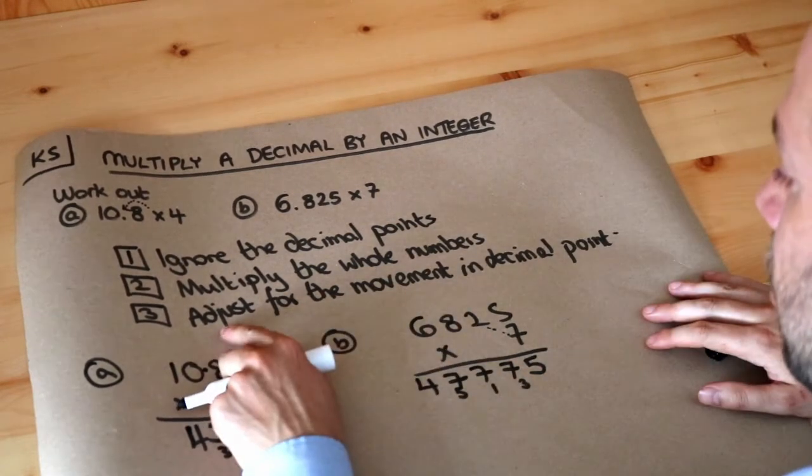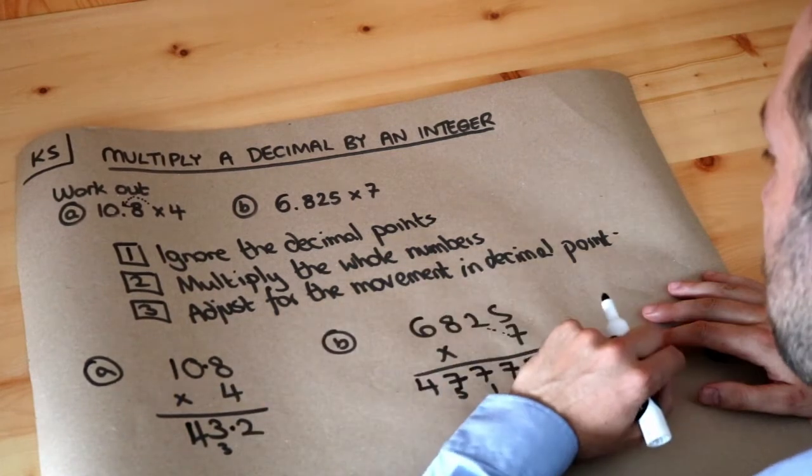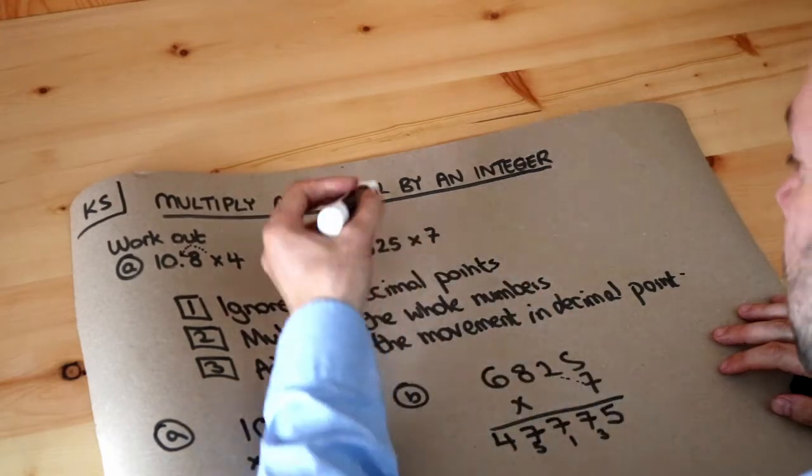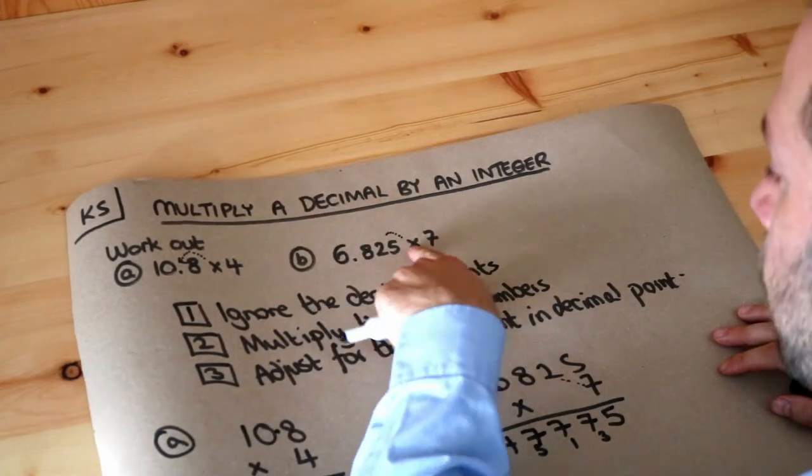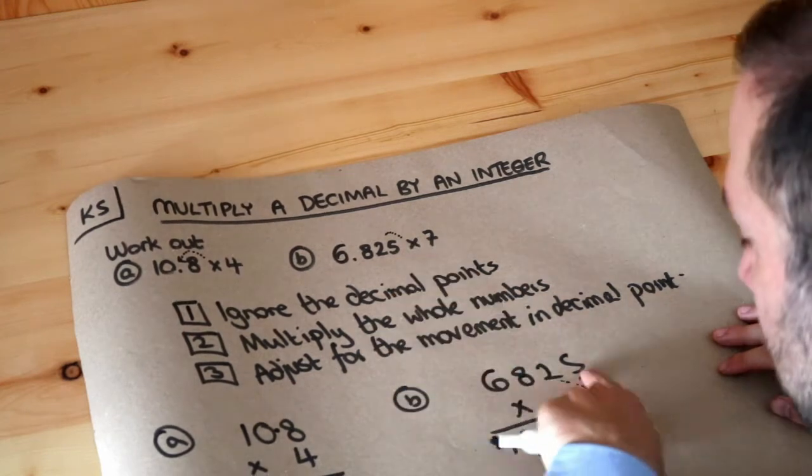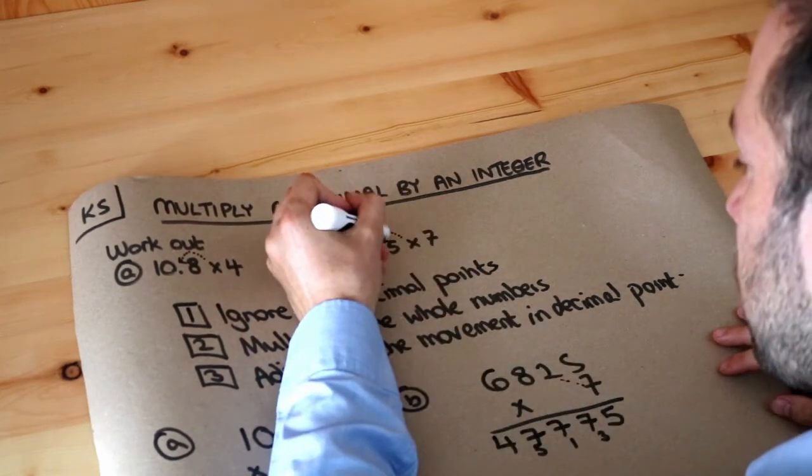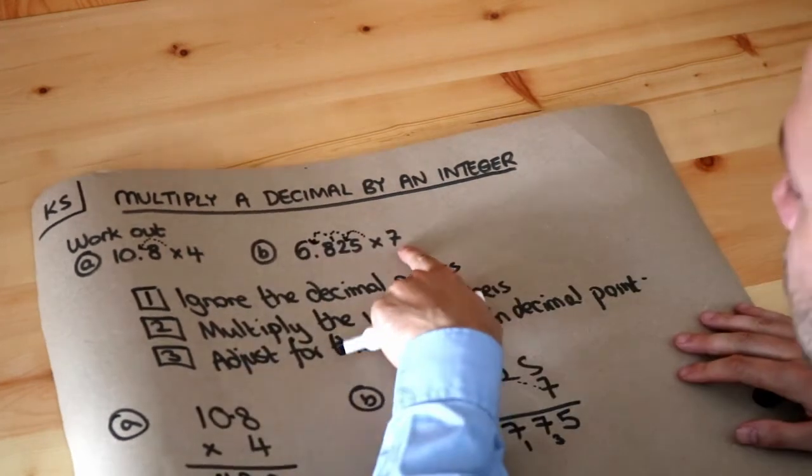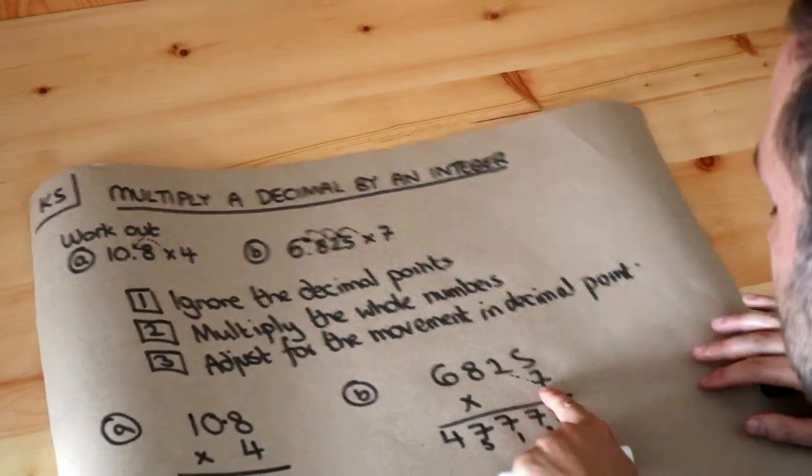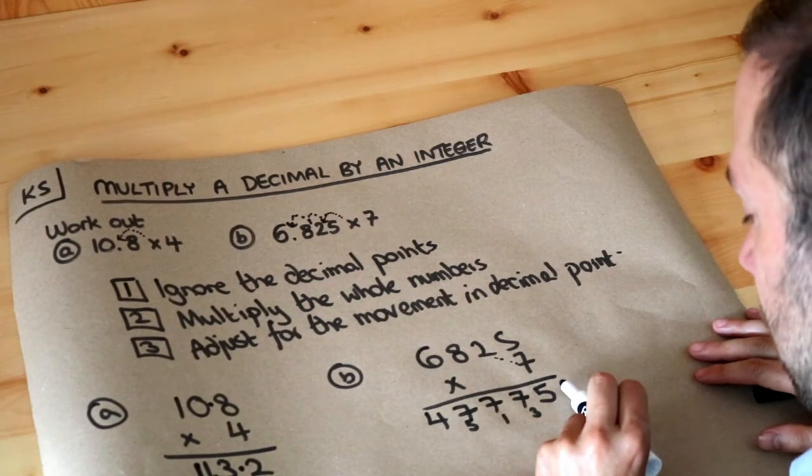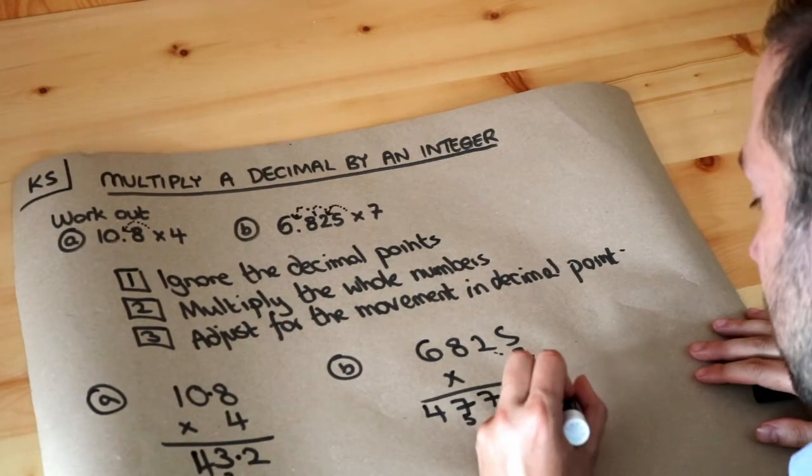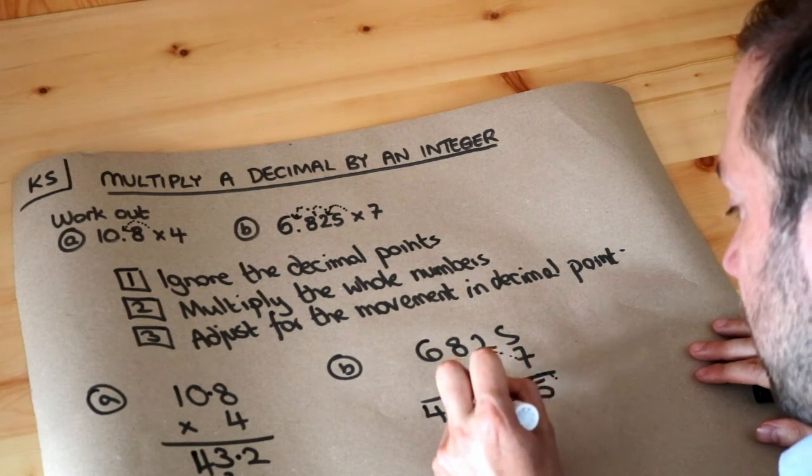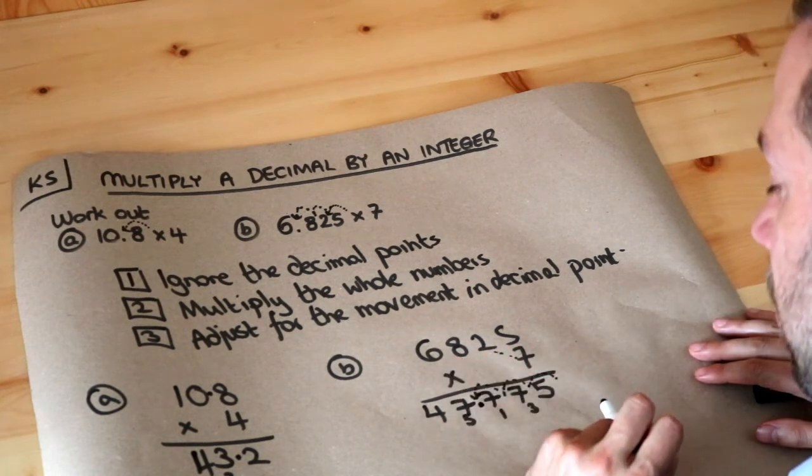Now we adjust for the movement in the decimal point. We did 6825, but the decimal point was actually after the 6, at 6.825. Counting from the end where the decimal point was in our number, that's one jump, two jumps, three jumps. There's no jumps for the 7 because it stayed at 7. So from the end of this number, starting after the units digit, we move one jump, two jumps, three jumps. So we get 47.775.